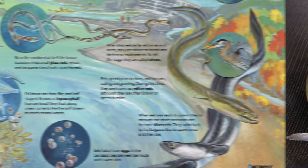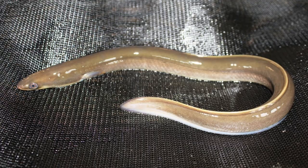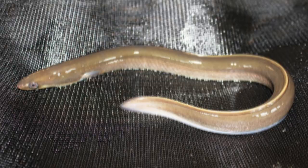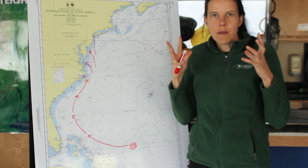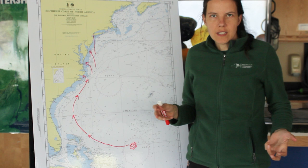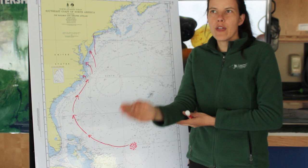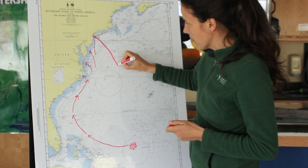These adult eels get some kind of signal to return back to the Sargasso Sea. At this point they're called silver eels — they've gotten bigger, their eyes change, their eyes get larger, and they actually stop eating and digesting food entirely, because they've become almost like a missile on a singular path back out to the Sargasso Sea. Male and female silver eels complete this life cycle on a migration path back out to this calm patch in the Atlantic Ocean.